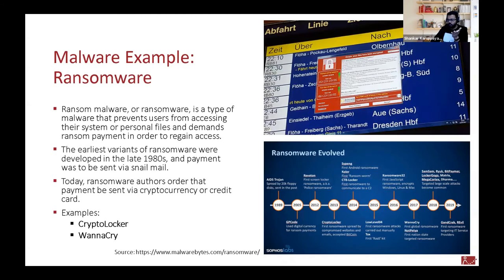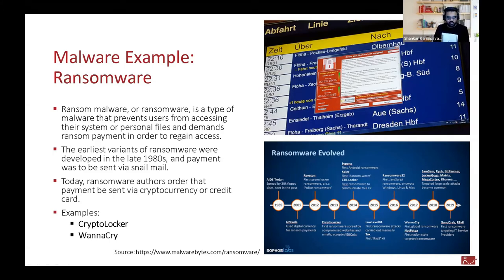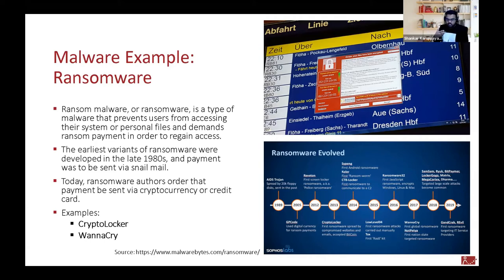Ransomware — the top right image is actually a screen of a train station notice panel showing which train arrives at which track. At that moment, this machine had been compromised by WannaCry ransomware. You have to pay in Bitcoin, otherwise the system is locked. This particular system is okay, but imagine such a system in a hospital on a life-support device — it's a matter of life and death. That is what ransomware does.